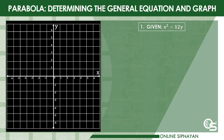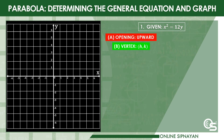Example number 1: we are given x² = 12y. As you can see, this example lies under the first case of parabola in the summary table. Observing the given, it will give us an opening going upwards because it has a positive focal distance. Next is the vertex. In summary table number 1, vertex is at (h, k). Since the given has no value for h and k, it is automatically at the origin, so the vertex is at (0, 0).